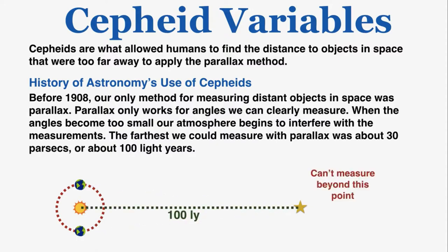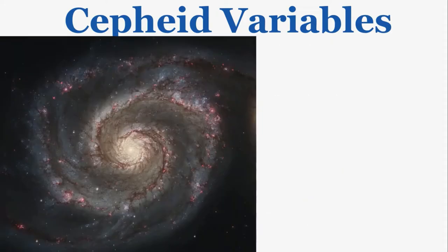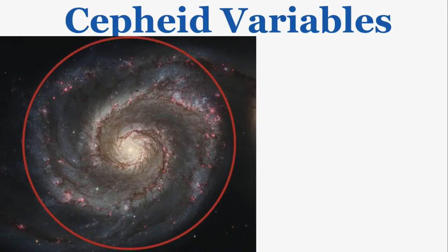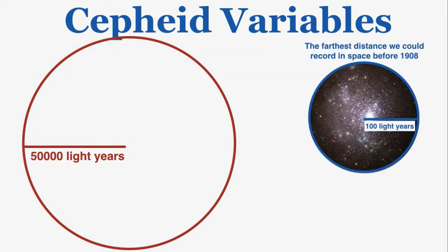We could not measure the distance to any object beyond 100 light-years, and that's an incredibly small distance compared to what we can observe. For example, the radius of the Milky Way is 50,000 light-years, so if we could only measure 100 light-years out, the blue circle on the diagram represents how far we could measure in any direction before Cepheids and before 1908.